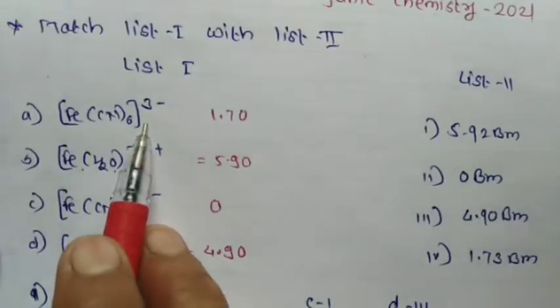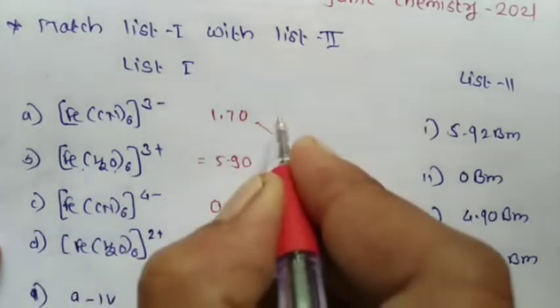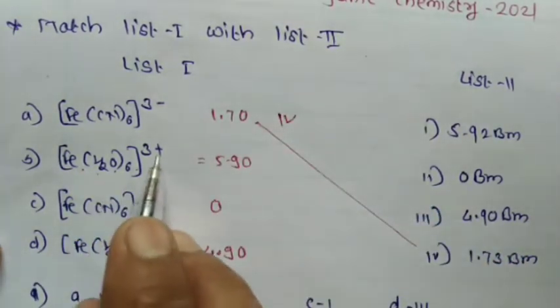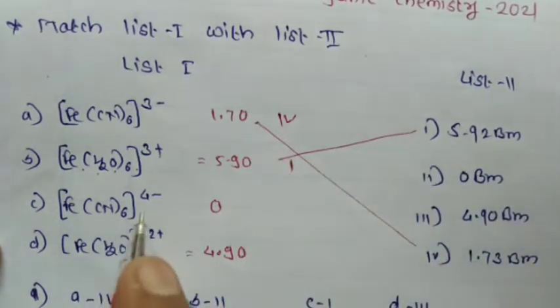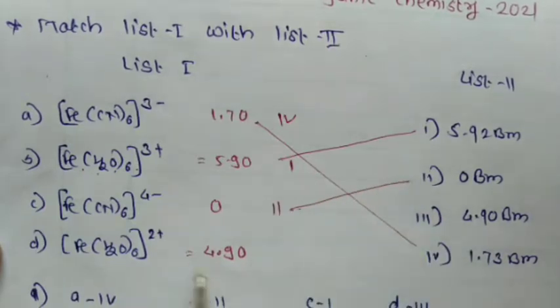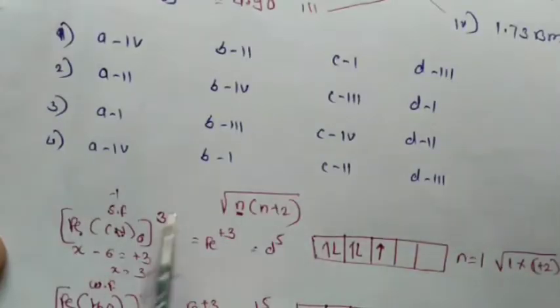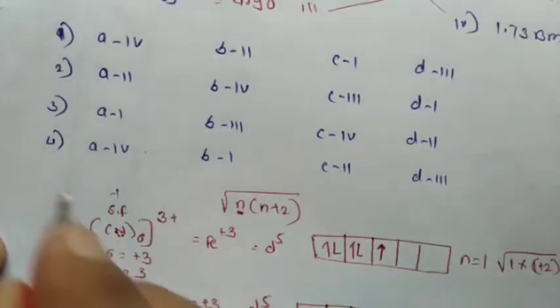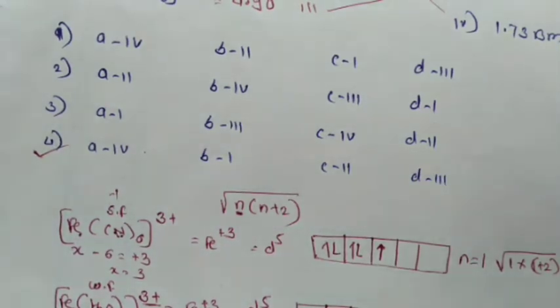Summary of matches: Fe(CN)₆³⁻ spin magnetic value 1.73 BM matches 4th option; Fe(H₂O)₆³⁺ value 5.90 BM matches 1st option; Fe(CN)₆⁴⁻ matches 2nd option (0 BM); Fe(H₂O)₆²⁺ matches 3rd option (4.90 BM). The correct answer is option C: 4, 1, 2, 3. Then we will see the next question.